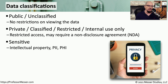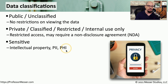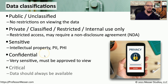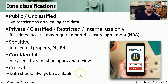Perhaps the next tier above private or classified information would be sensitive information. This might be intellectual property or secrets of a company. It could be your personally identifiable information, such as your name or address, or your protected health care information. If there's very sensitive information that you should only have access to view if you've been granted the correct permissions, we would classify that data as confidential. And we might add classifications for critical information, which might be specific to the processes we use inside our organization, or might be information that is publicly available.